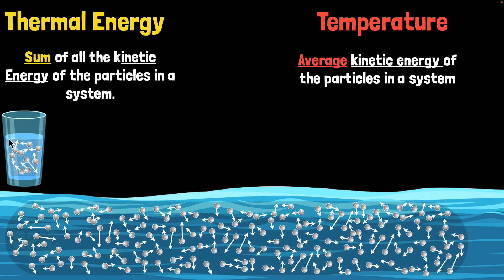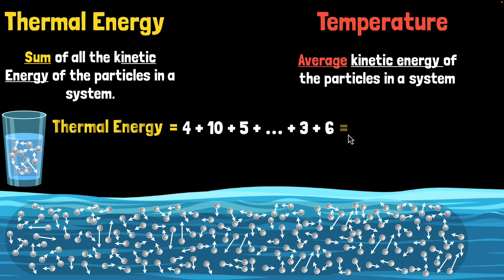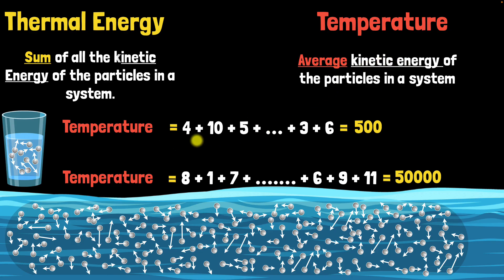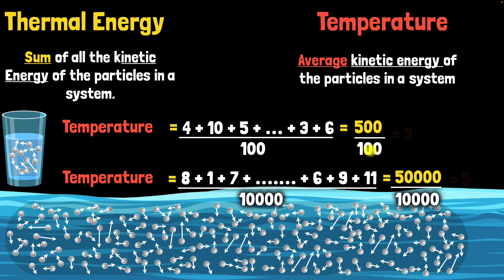To make sense of this, let's take some simple numbers. To calculate the thermal energy of the glass, assume there are only 100 molecules — the thermal energy would be the sum of the kinetic energy of all 100 molecules, which let's say is 500. For the ocean, assume there are 10,000 molecules and the thermal energy is 50,000. So the ocean clearly has more thermal energy. But for temperature, you find the average kinetic energy by dividing by the total number of molecules. 500 divided by 100 is 5, and 50,000 divided by 10,000 is also 5. So the thermal energy is not the same, but the temperature is exactly the same.